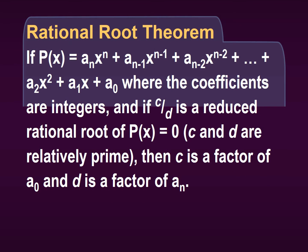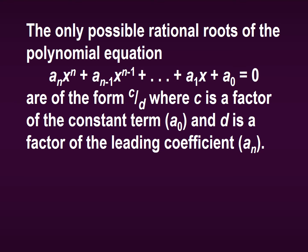This theorem is called the Rational Root Theorem, which says that if you have a polynomial where the coefficients are integers, then c over d is a reduced rational root of p(x) equals 0 only if c is a factor of your constant term (a-naught) and d is a factor of your leading coefficient (a-sub-n). So the only possible rational roots of a polynomial are in the form c over d, where c is a factor of the constant term and d is a factor of the leading coefficient.